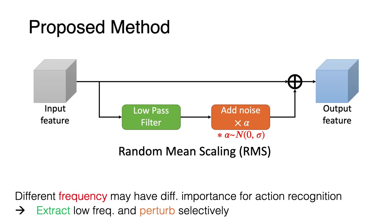Different from previous feature-based methods such as ShakeShake or ShakeDrop, our proposed method, Random Mean Scaling, perturbs low-frequency components only. We assume that low-frequency components contain peripheral information for action recognition, so perturbing them can add diversity to the sample without changing its action class.